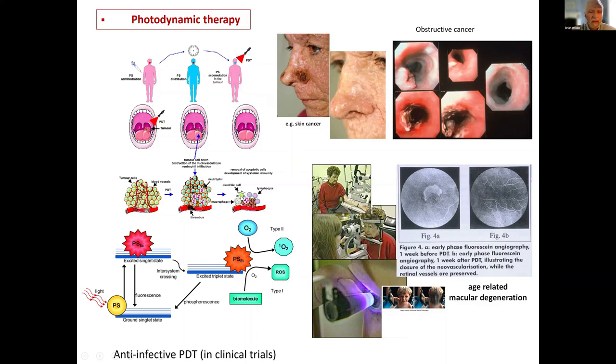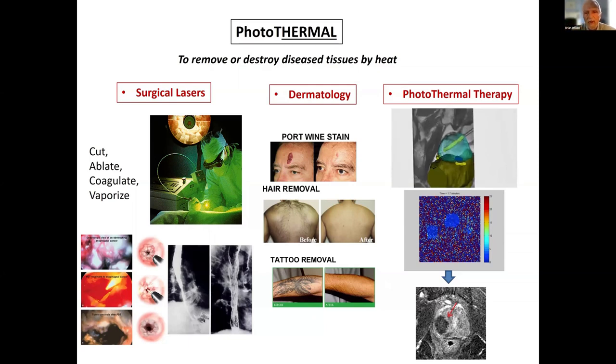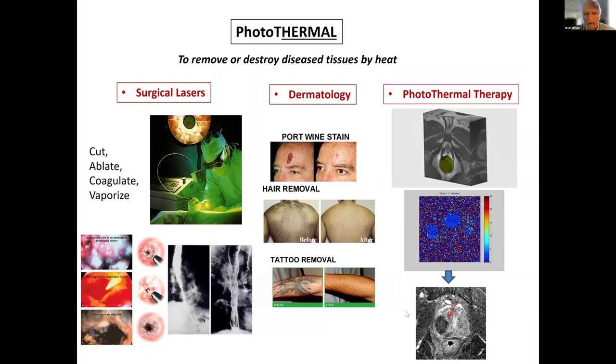Photothermal, the idea is rather than using chemical process, you use heat. The light energy is converted to heat, and that's a basis for many surgical lasers. It's a basis for lots of dermatological applications of light. And it's used in so-called photothermal therapy. This is work from our own group on using optical fibers placed into the prostate for patients with localized prostate disease. Near-infrared laser light is delivered and the tissue is heated up to greater than 55 degrees centigrade, and that essentially destroys the tissue, as you see from this MRI scan a week later.